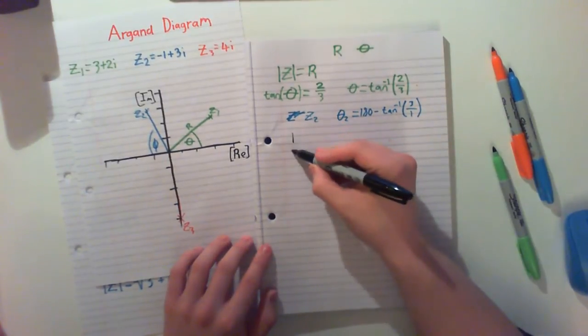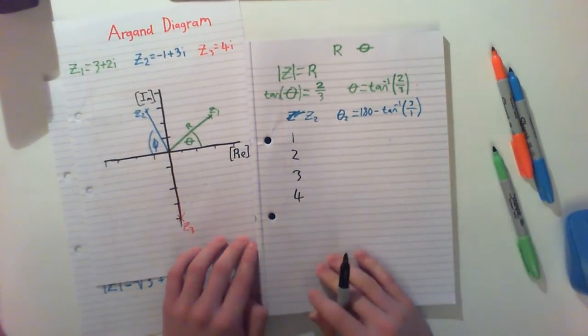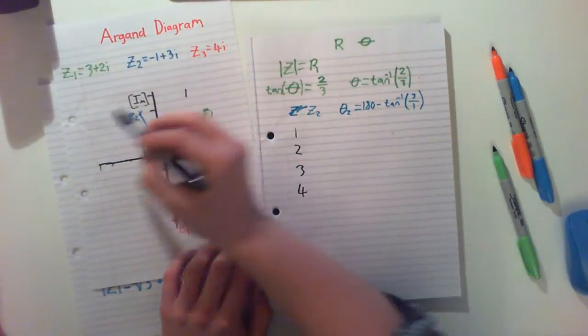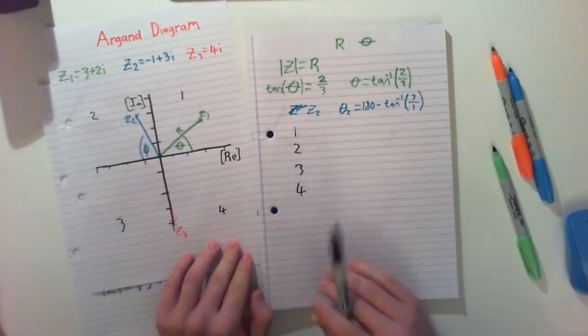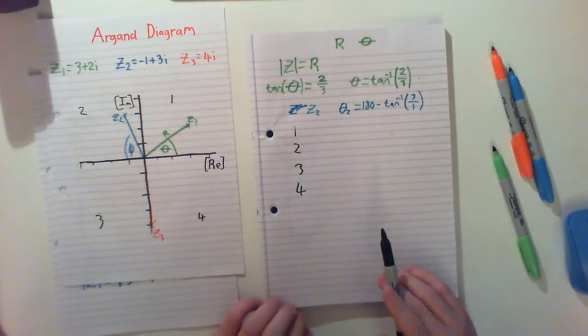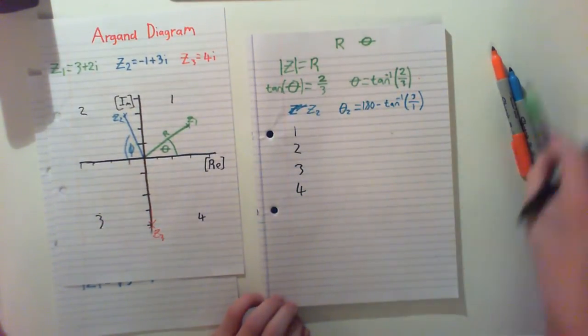And as we go around, what we can see is we can do, we'll split the graph into sections. Section 1, section 2, section 3, section 4. Much like when we're using the graph of a unit circle in trigonometry.